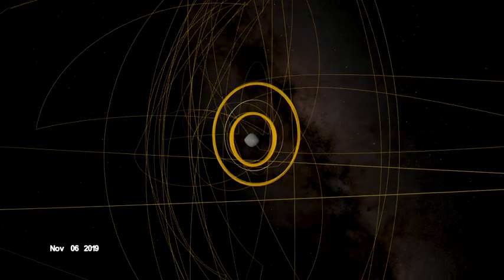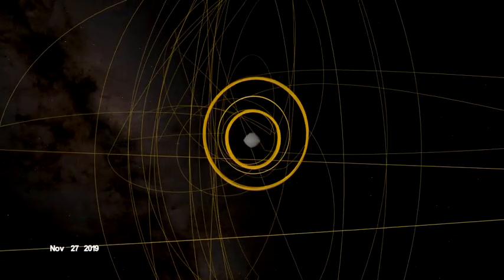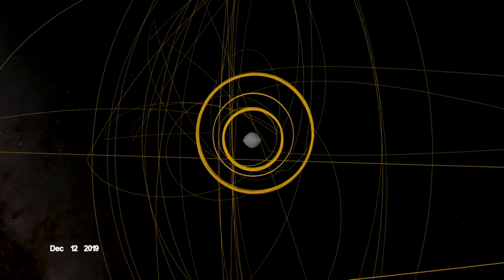OSIRIS-REx concluded its first year at Bennu back in orbit, circling the asteroid's terminator, or boundary, between day and night.